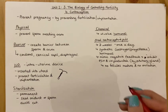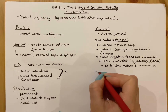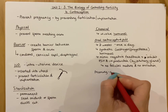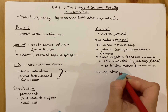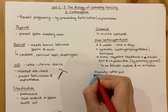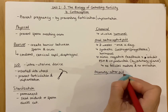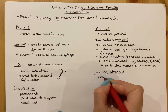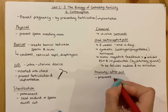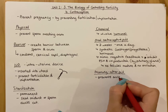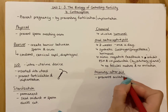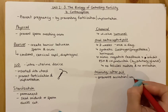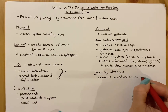The next method is the morning after pill. It can do two things: it prevents ovulation if ovulation hasn't occurred yet, or it prevents implantation if ovulation and potentially fertilization have already occurred.